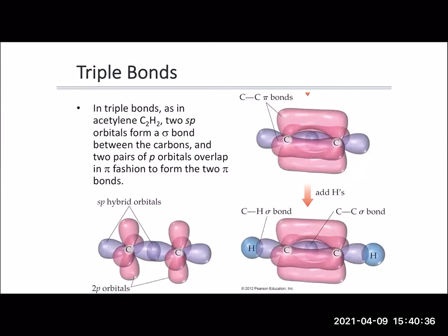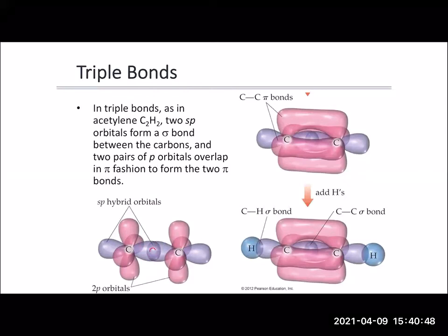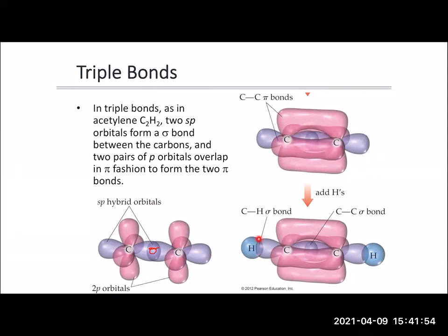Triple bonds have even more electron density around them. In a triple bond, we have a sigma bond in the middle — in purple here — from our hybridized sp orbitals, and then two unhybridized p orbitals. The p orbitals on the top and bottom overlap, and the ones in the plane overlap in the front and back. This gives us the structure with the sigma bond in the middle, a pi bond on the two sides, and another pi bond on the top and bottom. That's why triple bonds are so strong — look at all that electron density and orbital overlap connecting the two atoms. We can add hydrogens on the hybridized orbitals to make acetylene.